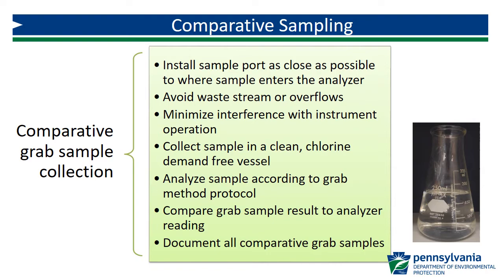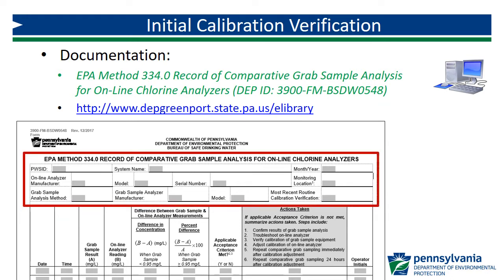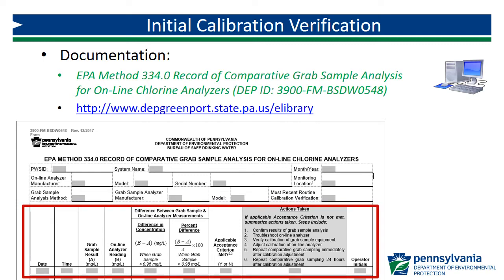Document all comparative grab sample results. For documentation, use the DEP form for comparative grab sample analysis for online analyzers. All of DEP's Method 334.0 forms can be found on eLibrary. Begin by completing the general information at the top: record your PWS ID, system name, the current month and year, and the online analyzer manufacturer, model, serial number, and location. Also record the grab sample analysis method, manufacturer, and model number of the grab analyzer, and the most recent routine calibration verification of the grab analyzer.